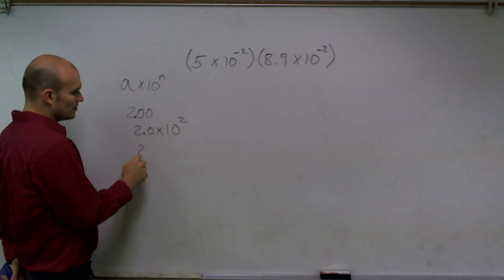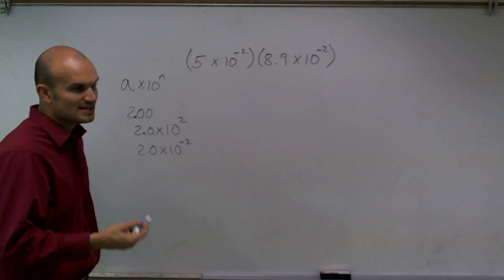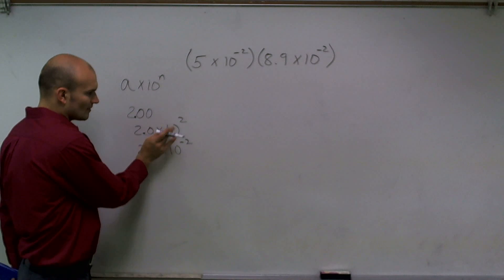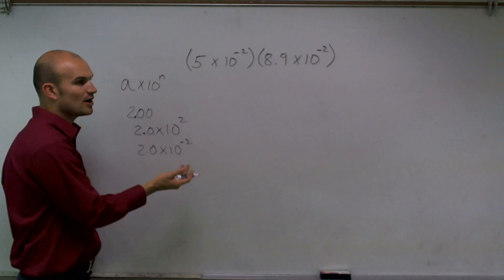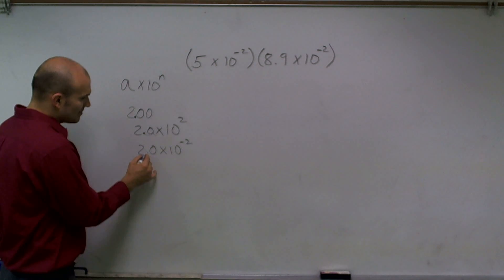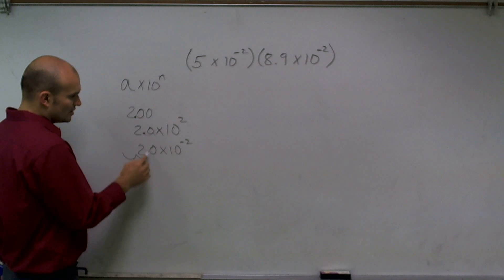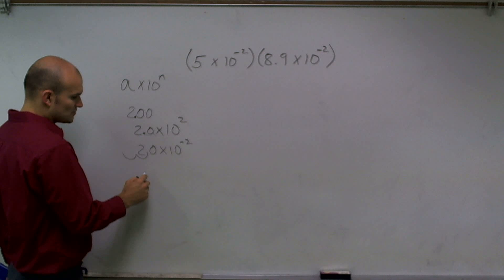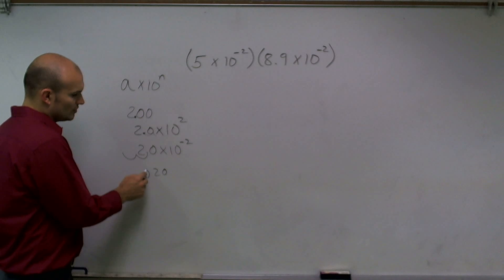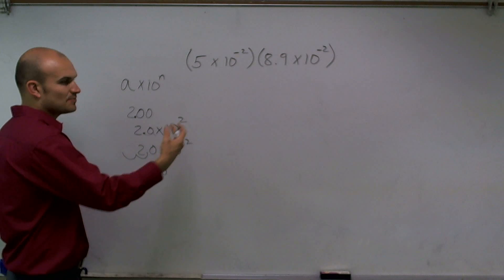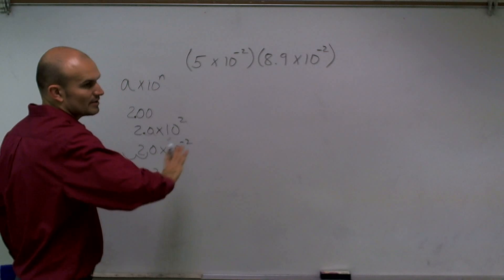However, if I wrote 2.0 times 10 to the negative second power, that's like dividing by 100, meaning I move my decimal point over two units. So 2.0 times 10 to the negative second is really .020. When we're looking at negative exponents, that's moving our decimal point to the left. When it's positive, we move it to the right, like we're adding zeros by multiplying by 10.